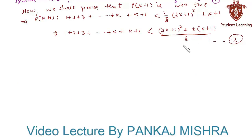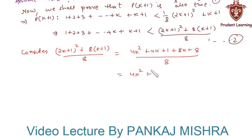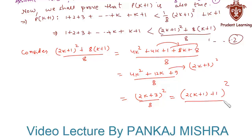Now we consider only the right hand side of relation 2 and simplify. We have (2k+1)² + 8(k+1) over 8, which expands to 4k² + 4k + 1 + 8k + 8 over 8, giving 4k² + 12k + 9 over 8. Factorizing the numerator gives (2k+3)² over 8, which can be written as (2(k+1)+1)² over 8.